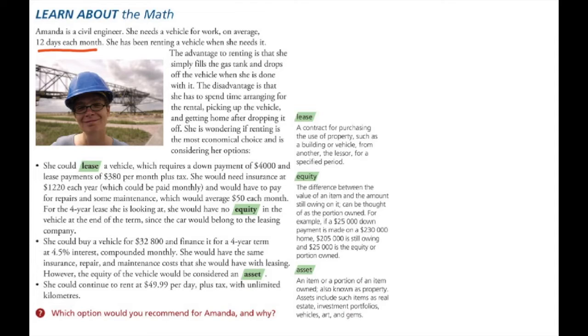Sometimes that comes down to money. So she could lease a vehicle, which requires a down payment of $4,000, which means same thing as a mortgage. She would have to have $4,000 to hand over to the car company. Her lease payments means she would also be paying $380 per month. Because she is leasing the vehicle, she needs insurance, so she needs plates, which are $1,220 each year. And as usual, we can pay those monthly.